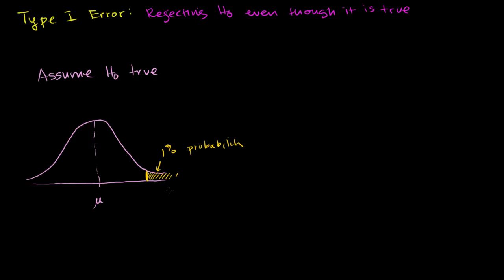Let's say that 1% is our threshold. We're going to assume that the null hypothesis is true. There's some threshold that if we get a value any more extreme than that value, there's less than a 1% chance of that happening.